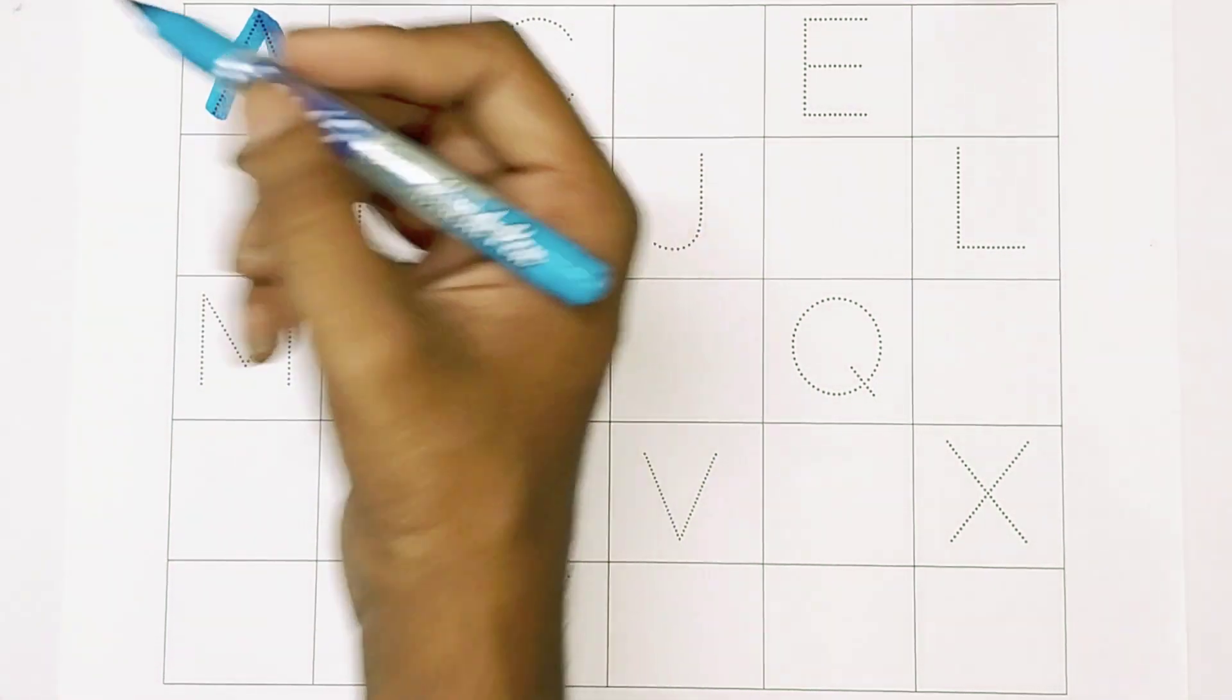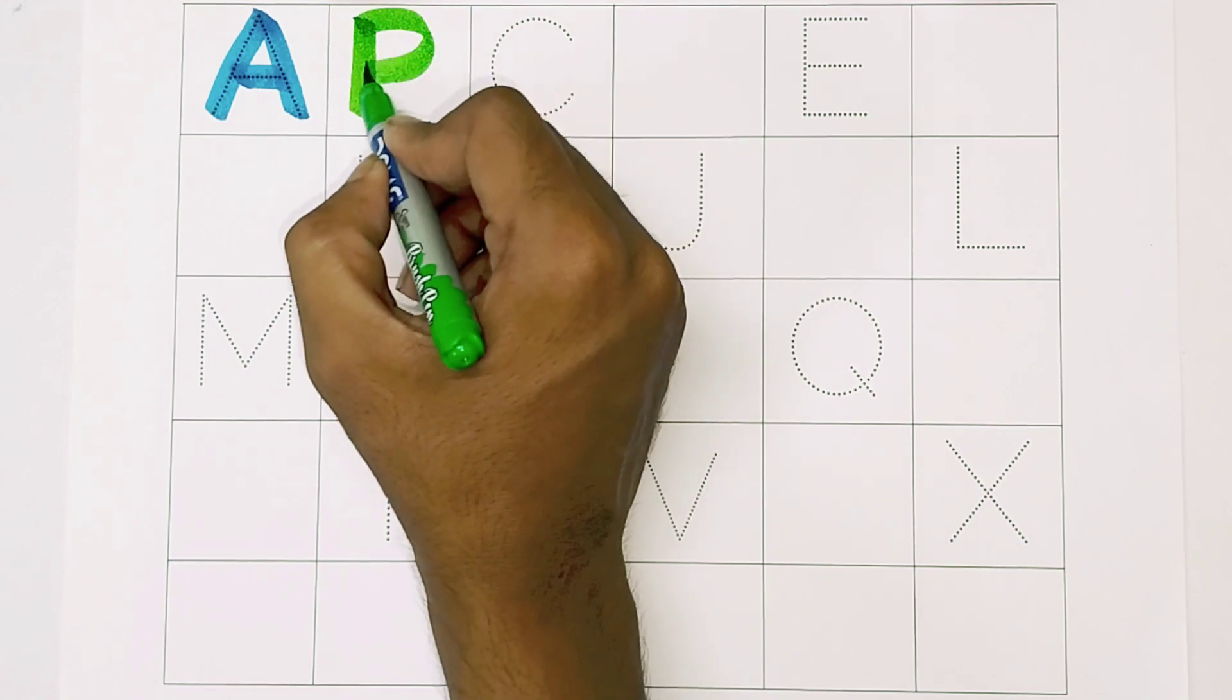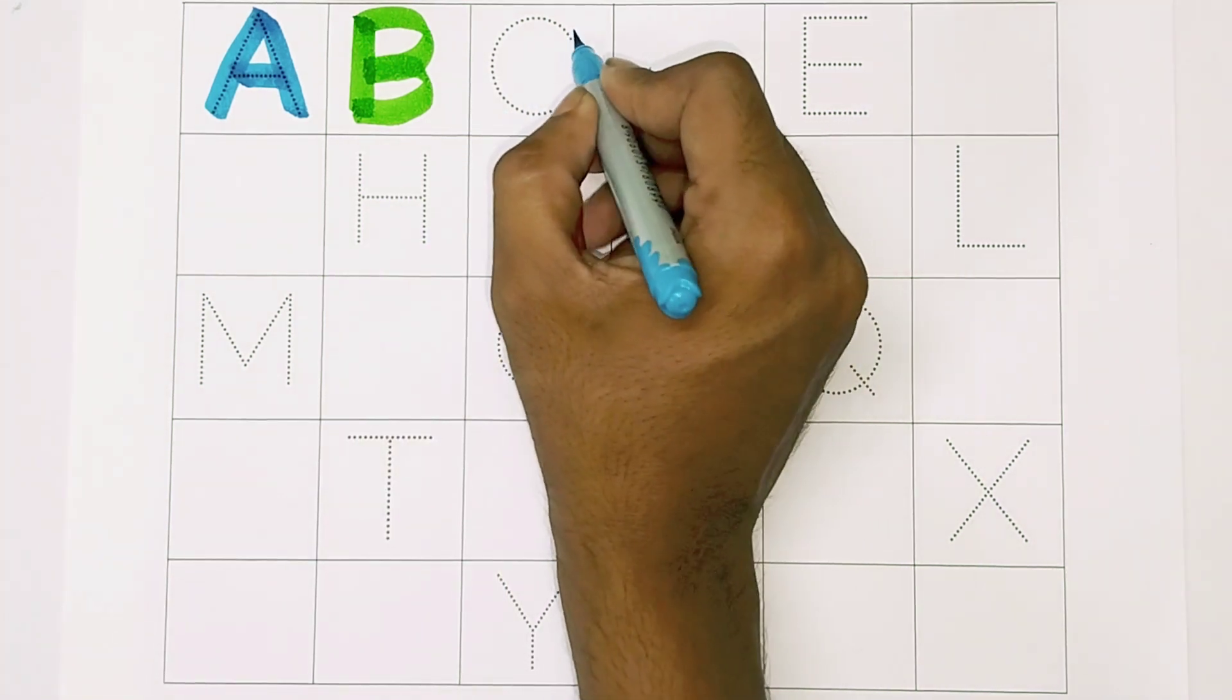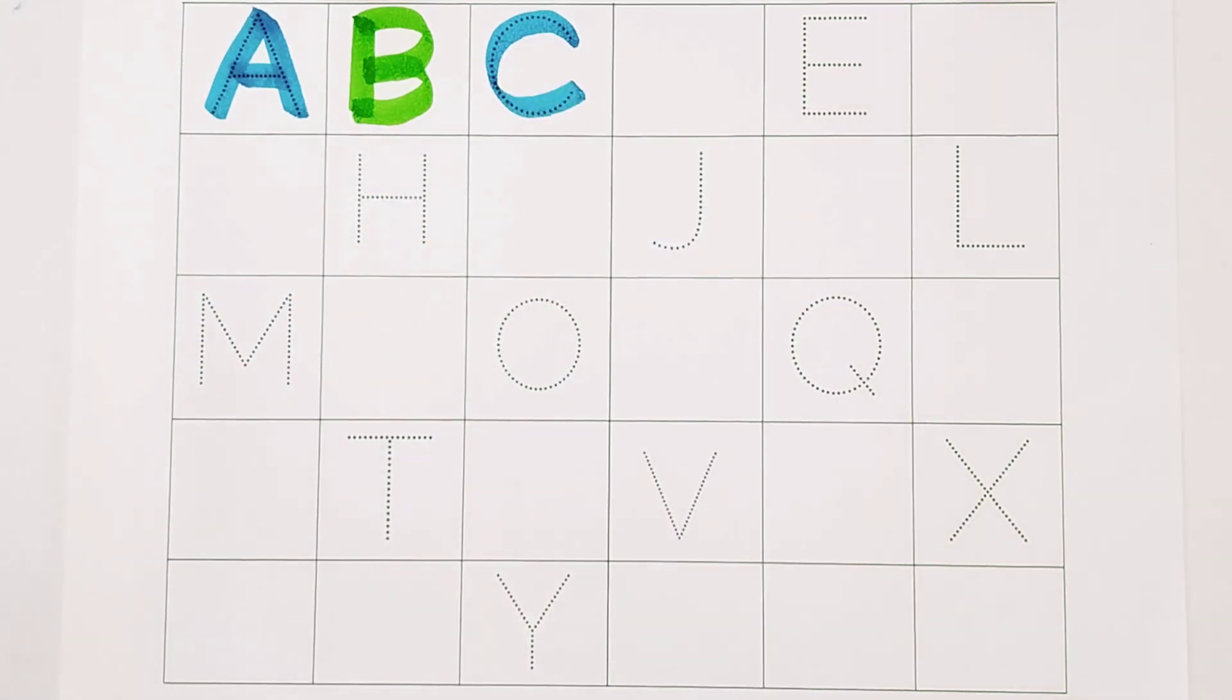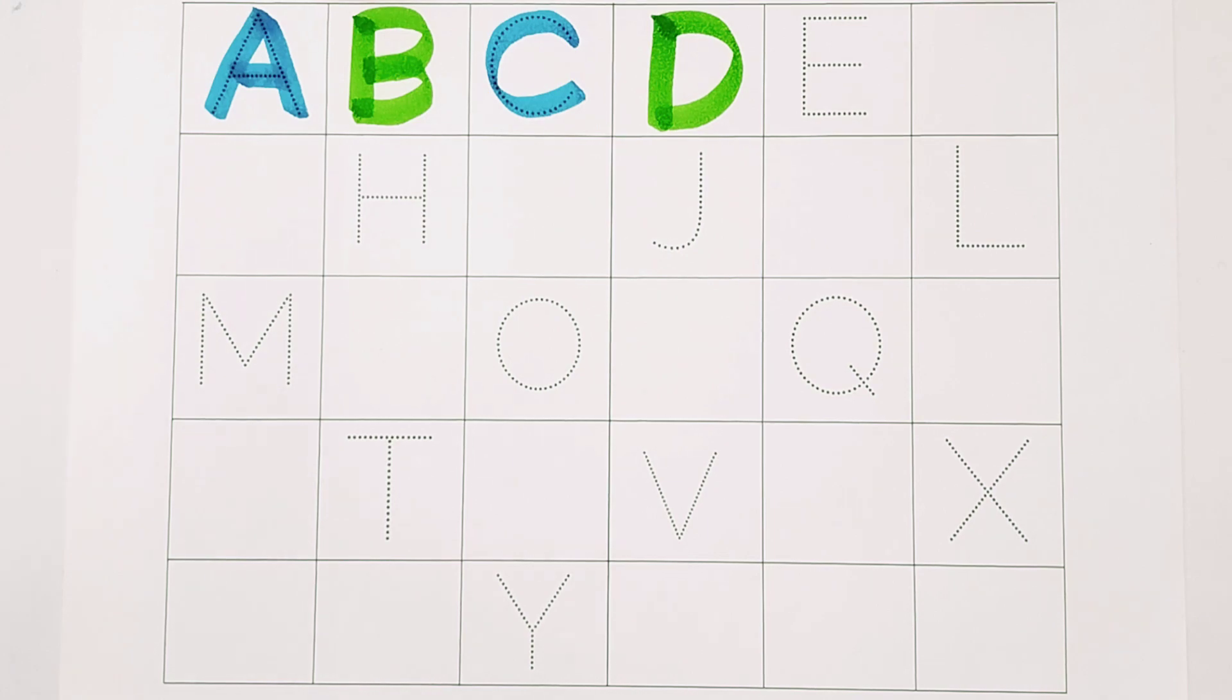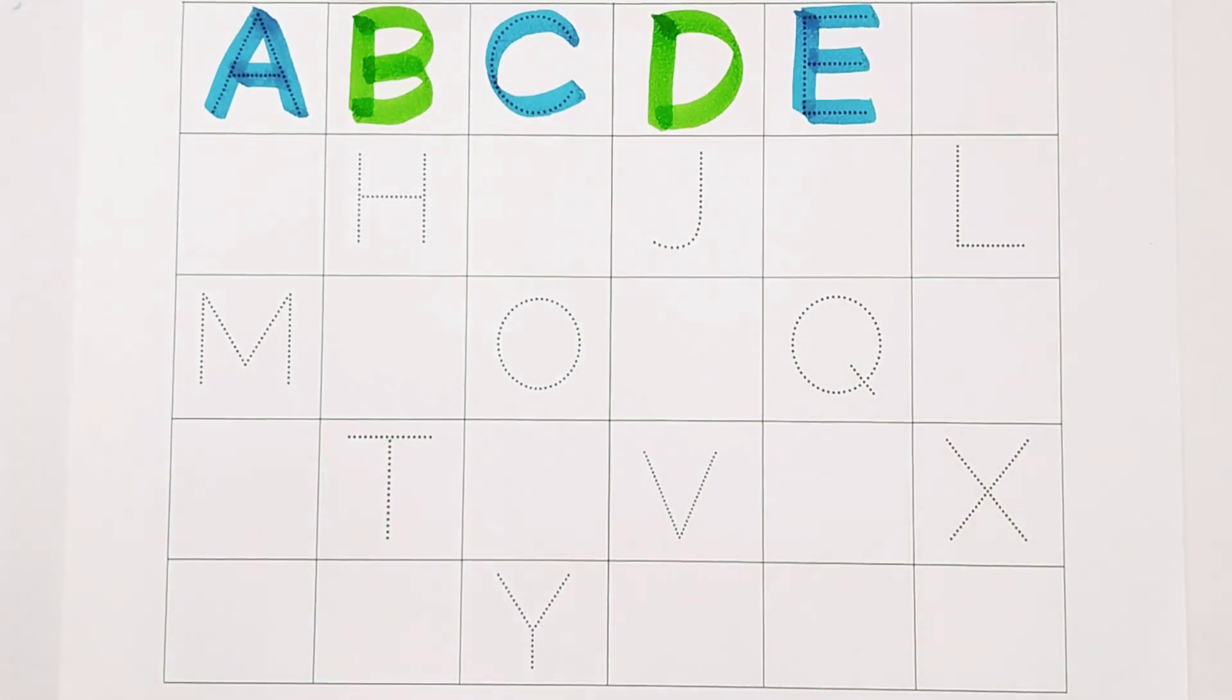A, A for apple. B, B for ball. C, C for cat. D, D for dog. E, E for elephant.